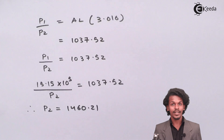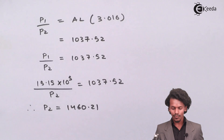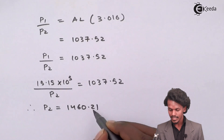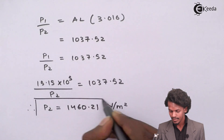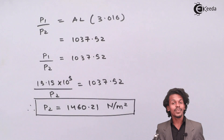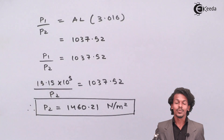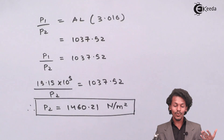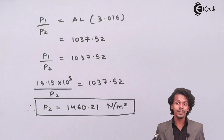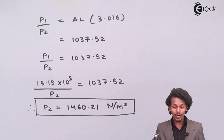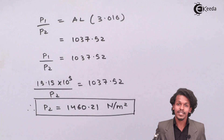Pressure is measured in Newton per meter square or Pascal. Since the initial pressure was given in Newton per meter square, the final pressure P2 is 1460.21 Newton per meter square. This is how we calculate the final pressure for this problem. Thank you friends for watching — I hope you understood how to solve this kind of numerical. Please share the video and don't forget to subscribe to Ikeda channel.